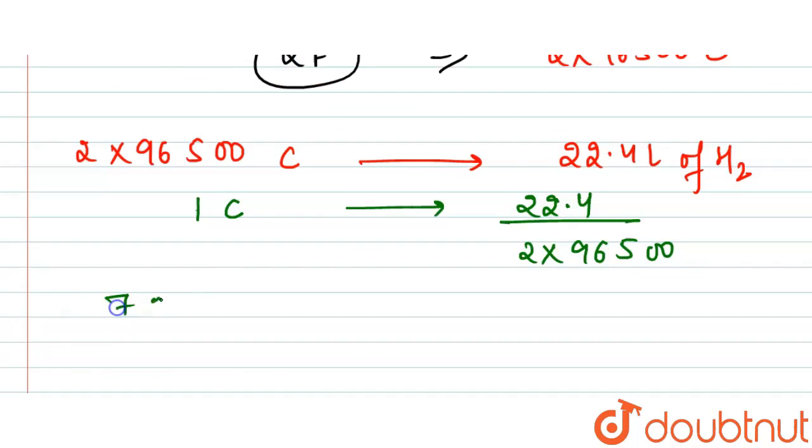So for 7200 coulombs, we will have 22.4 upon two into 96500 into 7200.